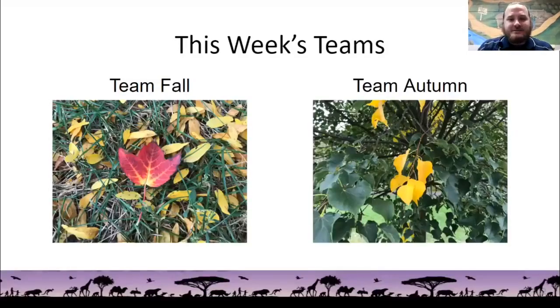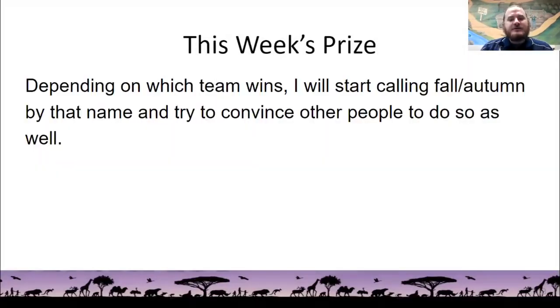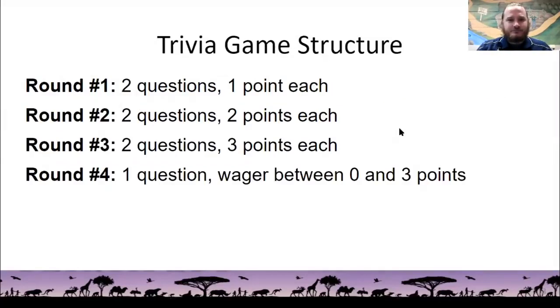So, this week's teams, as you may have already guessed, are Team Fall and then Team Autumn. So, think about which of these teams do I want to represent, because this week's prize is that depending on which team wins, I will start calling Fall or Autumn by that name for the rest of the season, and I'll also try to convince other people to do so as well, even though both of them are accurate terms.